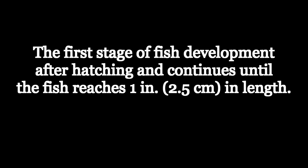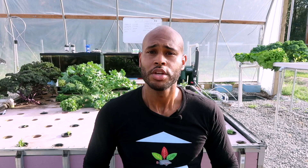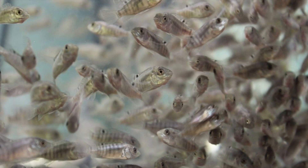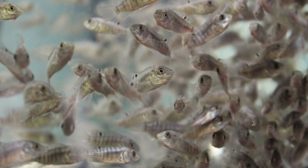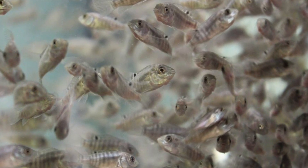Fry is defined as the first stage of fish development after hatching, continuing until the fish reaches one inch in length. This classification is somewhat arbitrary — some people use three-quarters of an inch — but we'll say one inch to keep it simple. Anything up to about an inch, we're talking about a fry, from when the fish starts to crack out of the egg up to that one-inch mark.